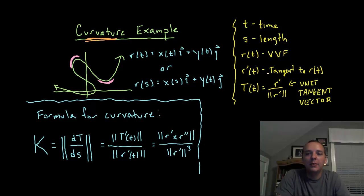R prime of t will be tangent to the vector valued function. R prime, like a derivative similar to your calc one class, will give you a slope in the calc one sense, but here in the calc three sense, r prime where r is a vector valued function will give you a vector that's tangent to your curve at that given location.